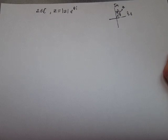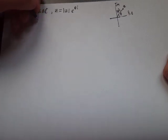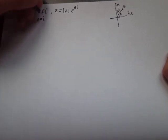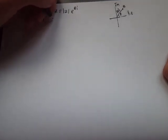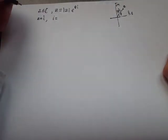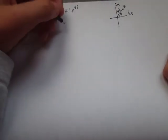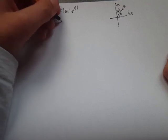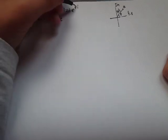Now let's plug in i for z. We get that i equals the absolute value of i, which will be 1 because i is the imaginary unit, so 1 times e to the angle i makes with the complex plane.